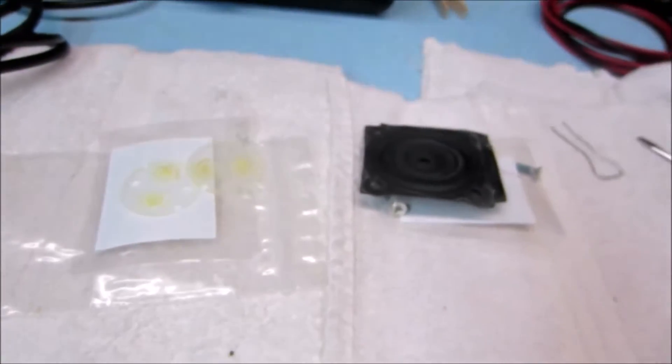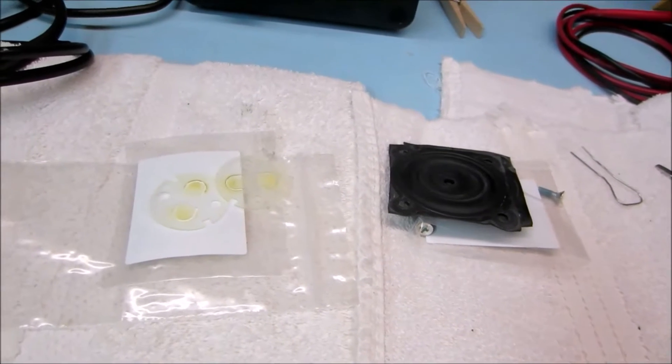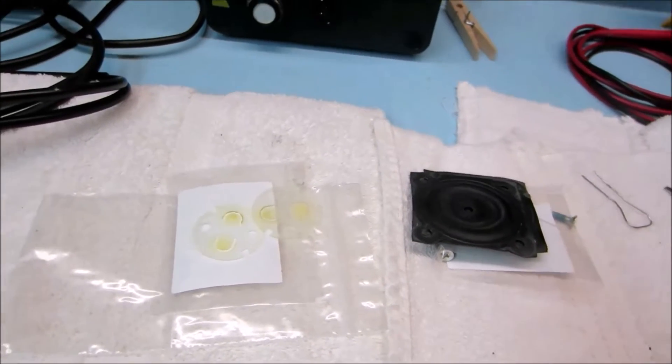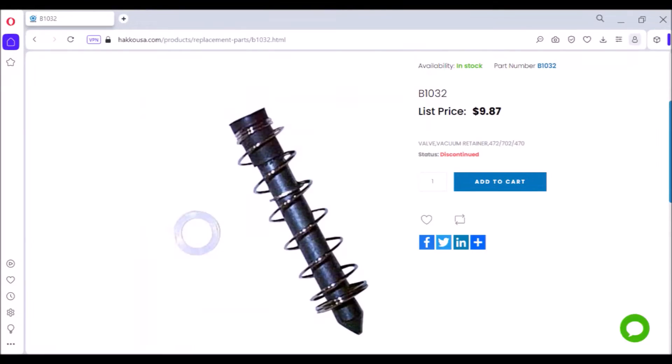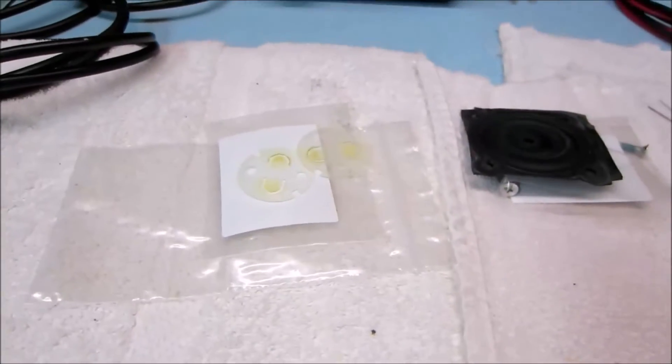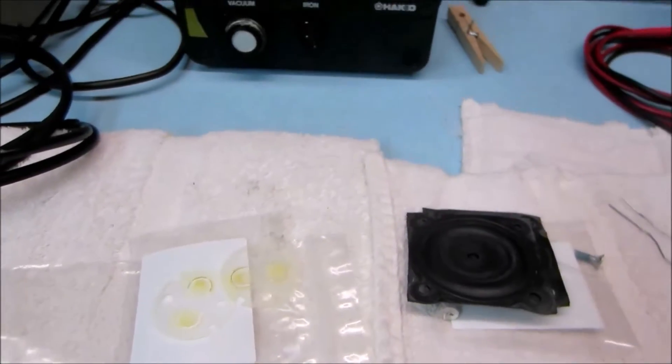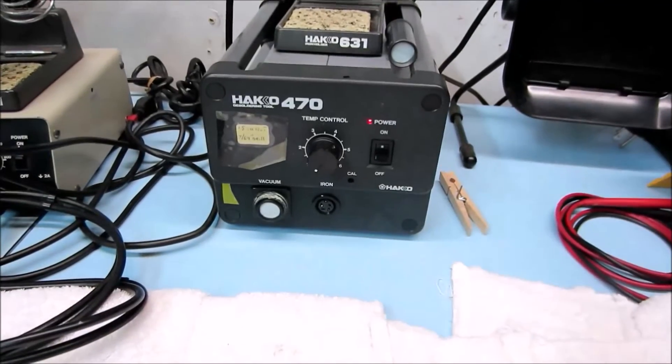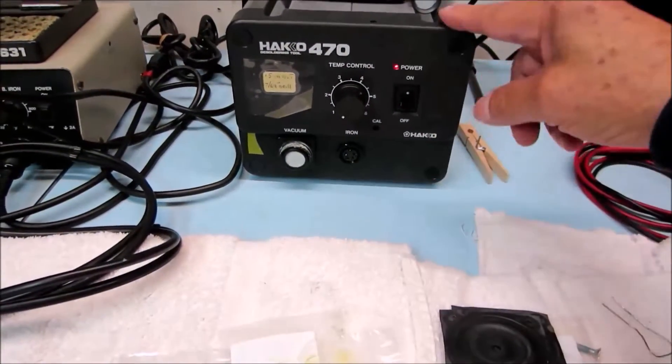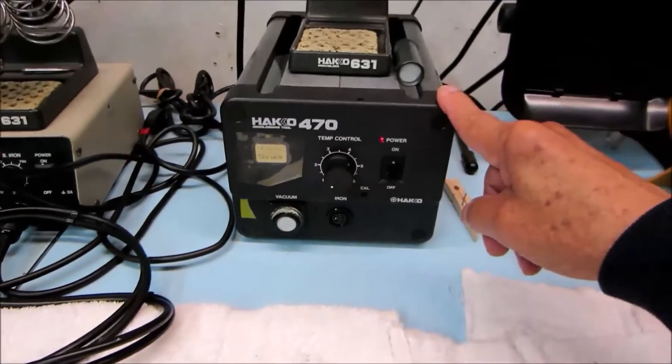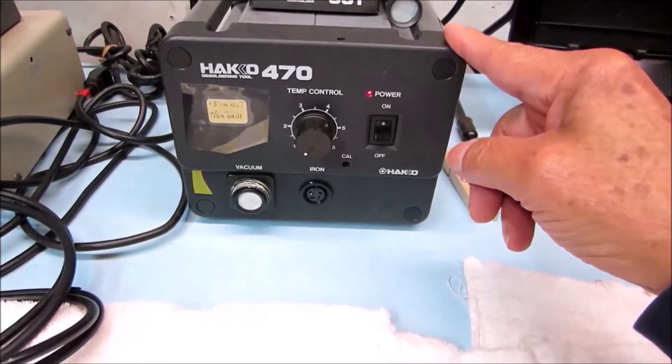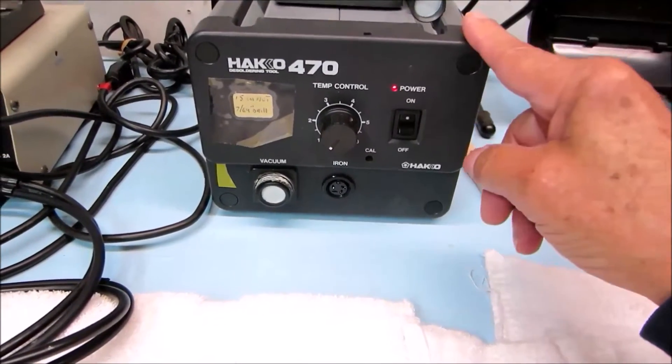Well, even with all the new parts, probably $60 worth of parts here if you count this check valve, it was still broken. The pump still would not shut off. So what's left? What's left is the control PCB, which is directly behind this front panel. So let's take that apart and let me show you what was actually wrong with this 470.